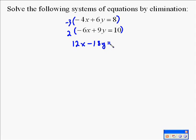And that's going to give us -12x - 18y = -24. And then that's going to give us -12x + 18y = 20.